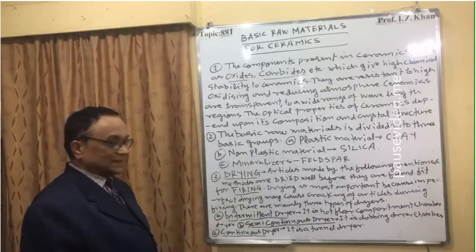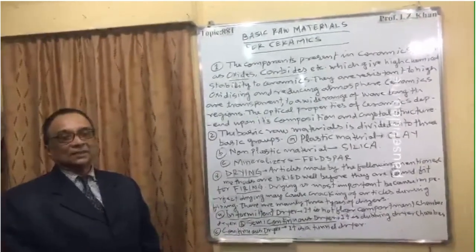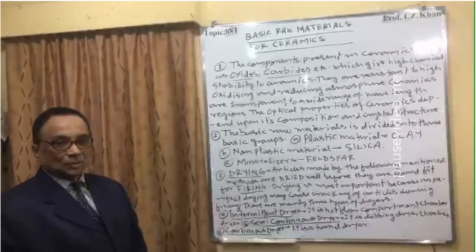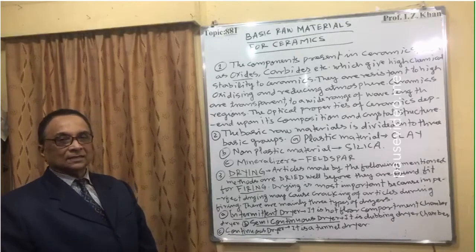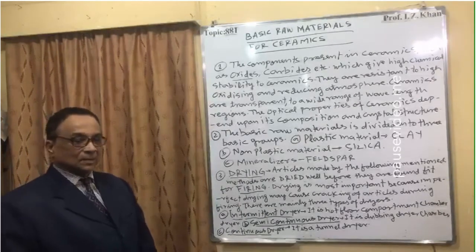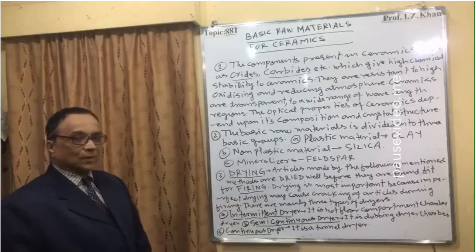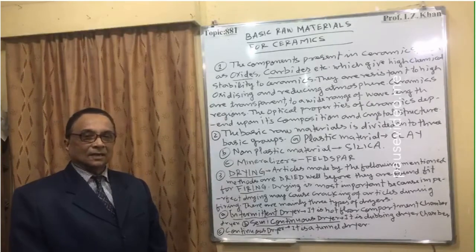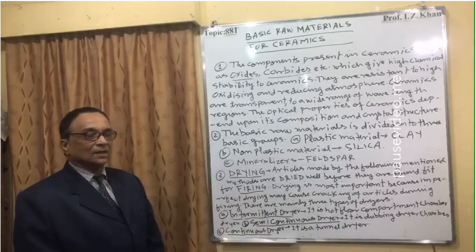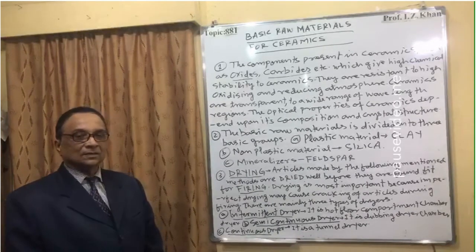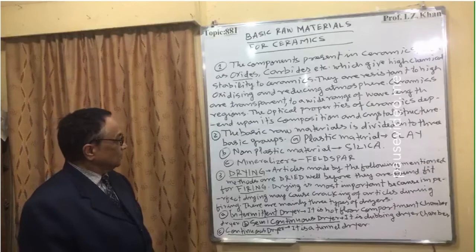The basic raw materials are divided into three groups. Number one is plastic material, which is clay. Number two is non-plastic material, which is silica. Number three is mineralizers — feldspar-type rock, ammonium silicate, or sometimes bauxite. These are mineral rocks that are used to mineralize the ceramics.